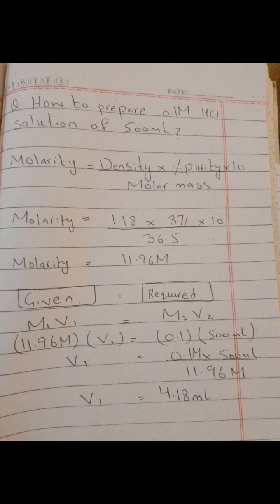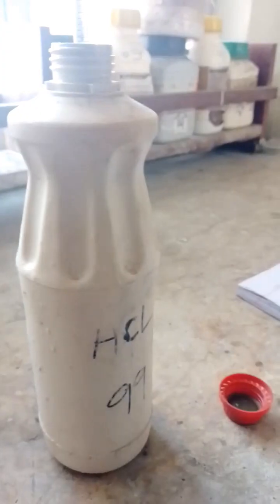After that, by using M1V1 = M2V2, you will input the calculated molarity and the required values for the solution you want to make. Then you can calculate the volume of HCl you need to take from the bottle, which is 4.18 ml.